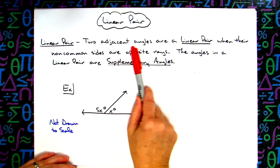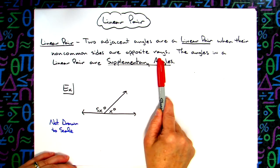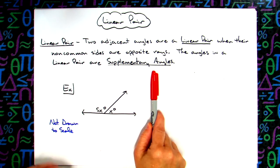Two adjacent angles are a linear pair when their non-common sides are opposite rays. The angles in a linear pair are supplementary angles.